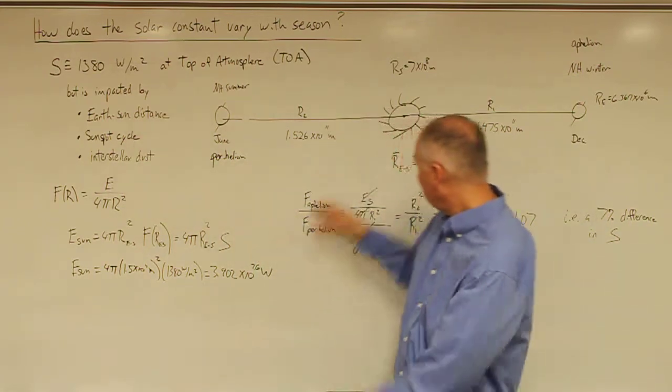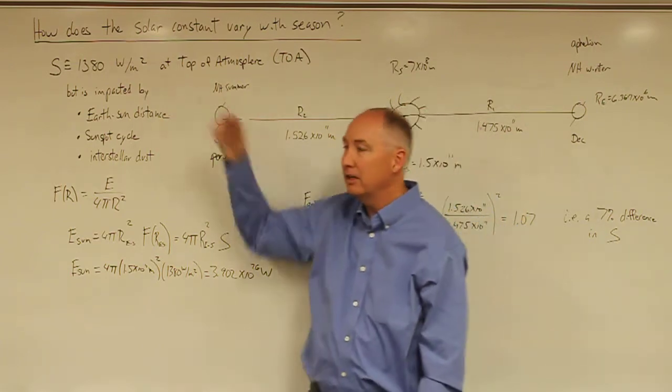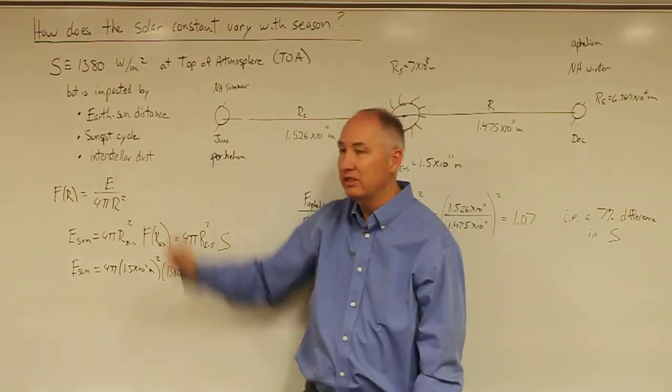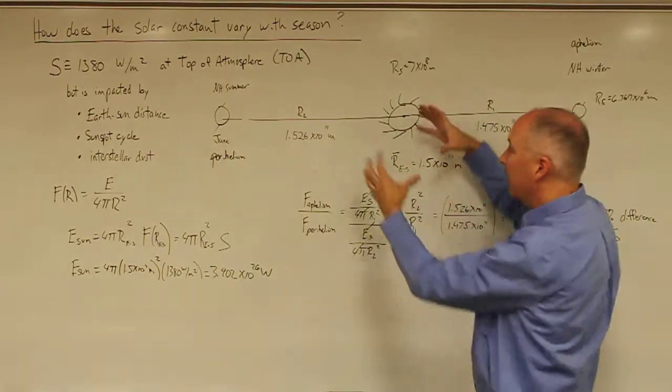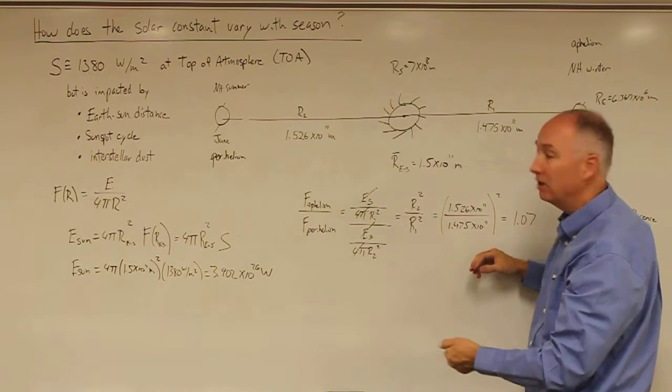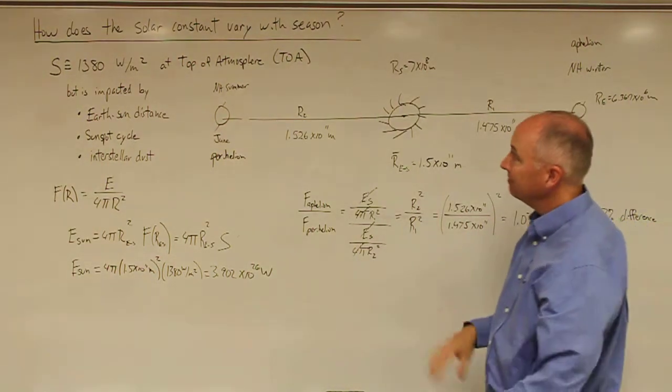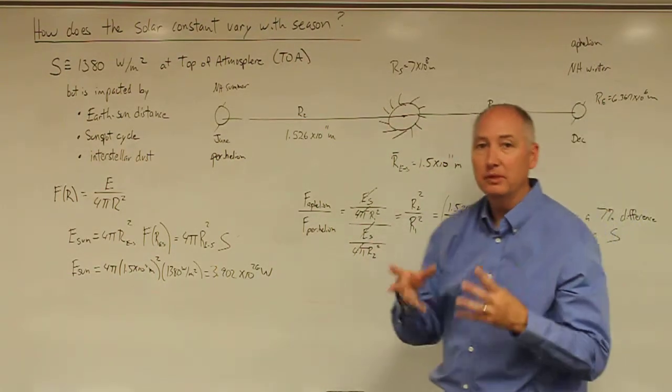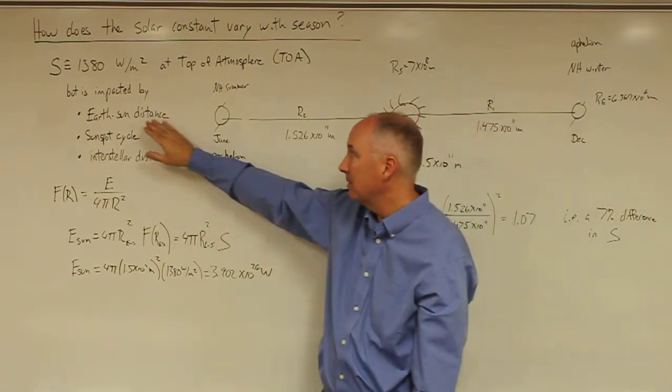So, the sun puts out this energy and it travels through space and gets to the Earth. The amount of energy that we receive at the top of the atmosphere is impacted by the Earth-Sun distance. Because as that energy is spreading out away from the sun, the surface area of that sphere gets bigger and bigger as R gets larger. By the time it gets to the Earth, if that distance changes between seasons, then we'll end up with a different amount of solar radiation at the top of the Earth's atmosphere. So it's affected by the Earth-Sun distance.